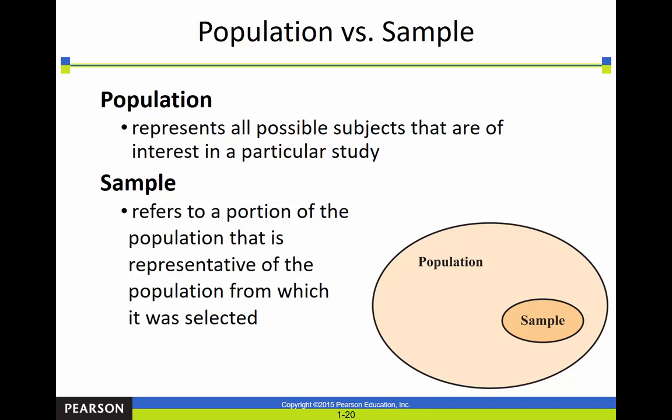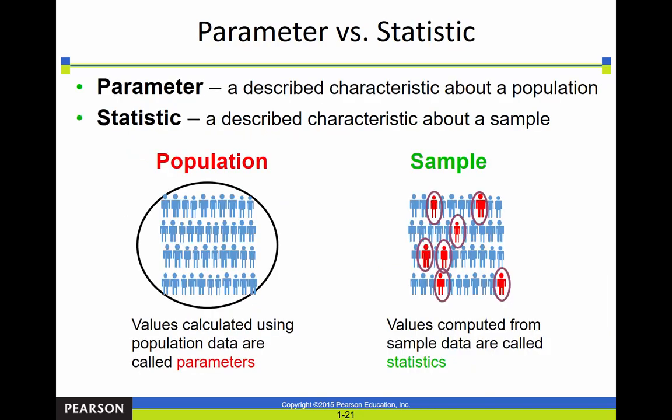Population represents all of the possible subjects that could be studied — for example, the population of the United States is all people in the United States. A sample is a subset or portion of the population that we pull out to make inferences about the whole population. The reason we use samples is that surveying everyone is just too expensive. Any characteristic about a population is called a parameter, and any characteristic about a sample is called a statistic — and that's where the term 'statistics,' like the name of the class, comes from.